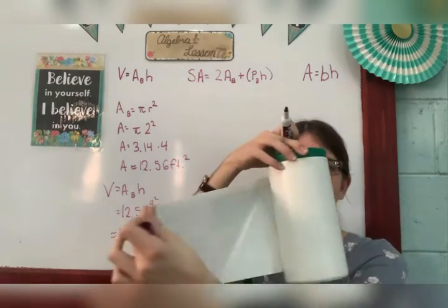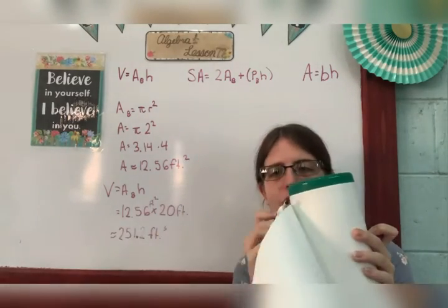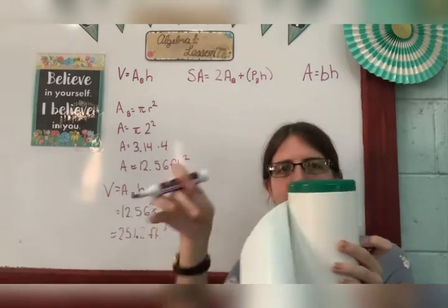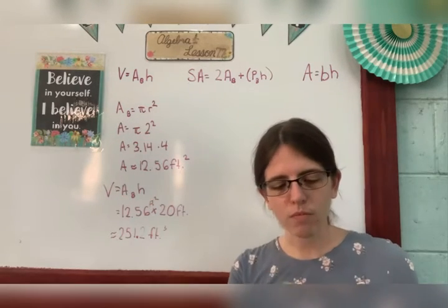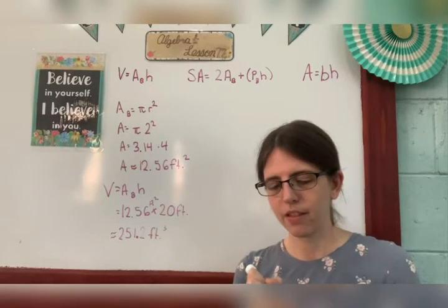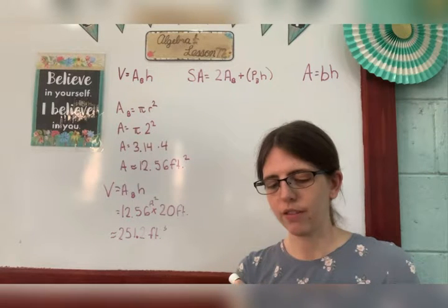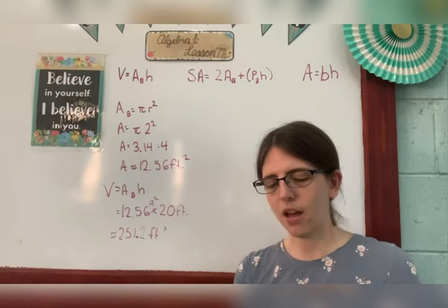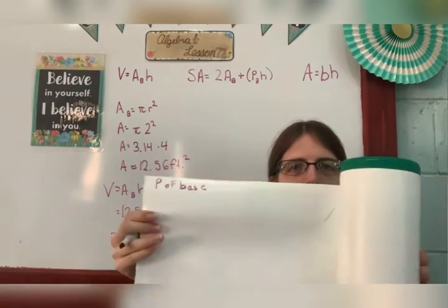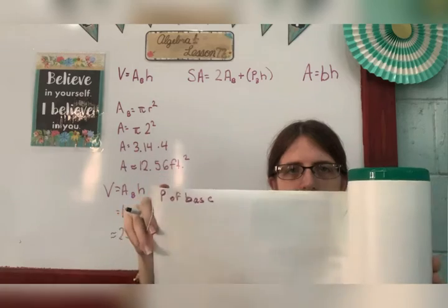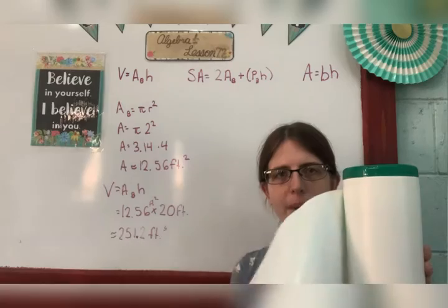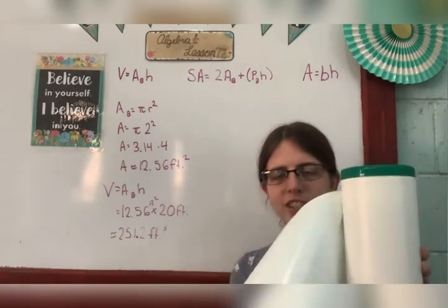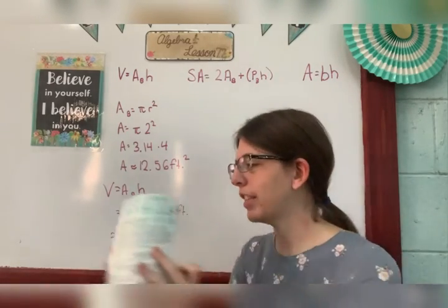The perimeter of the base is now this part right here. This is the part that wraps around. So, this is the perimeter of the base of my object. So, this here, this length, is the perimeter of my base. It's been opened up. And then the length is just the height of my object. So, let's do it.